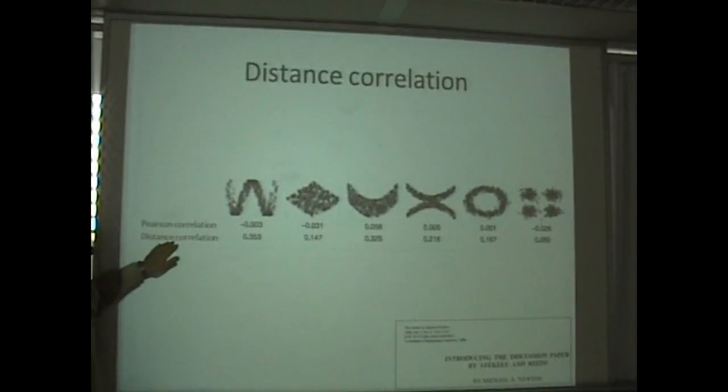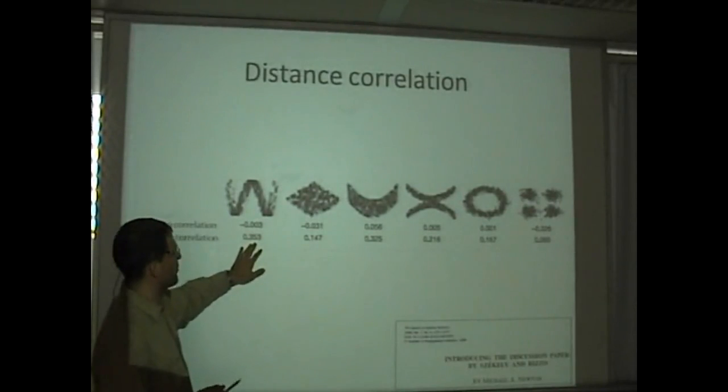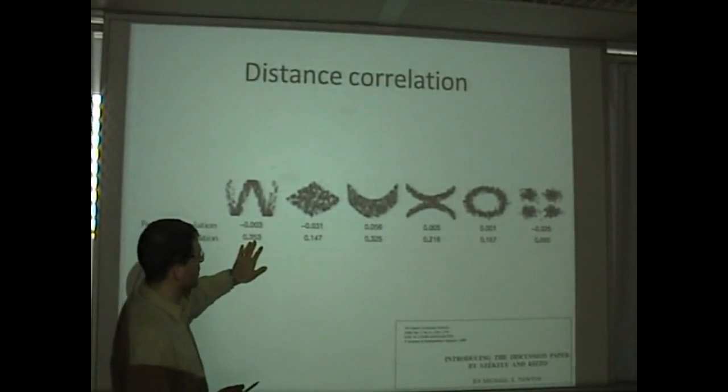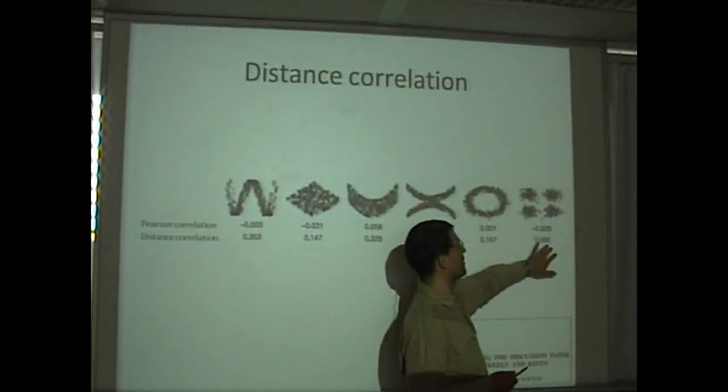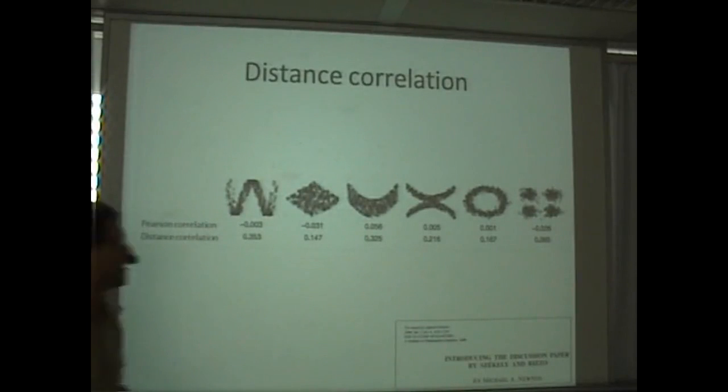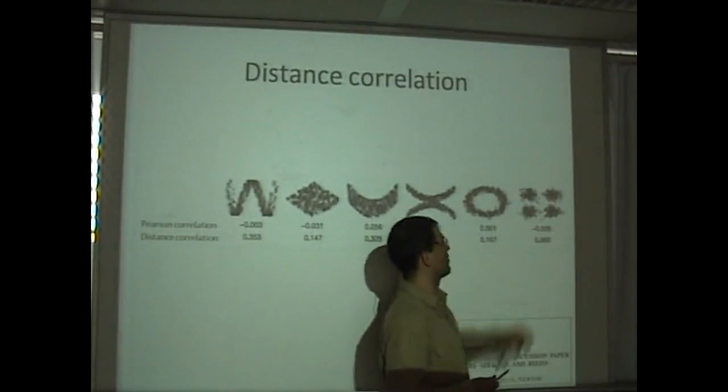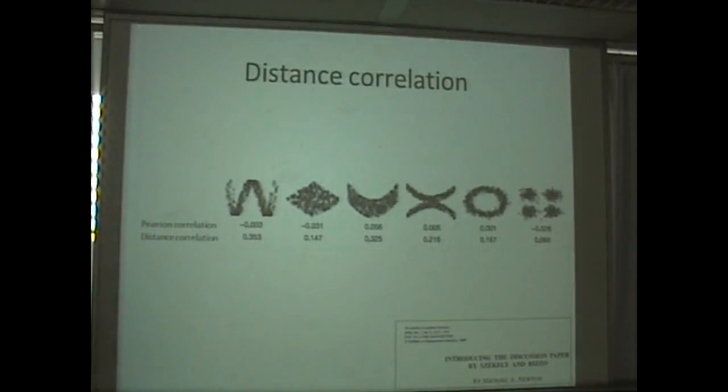And there are the values that you compute with the recipe that he describes to you in those two lines from the paper. There are the values for the distance correlation that happen to scale between zero and one. And the important thing is that here we get significantly non-zero values everywhere, except in the last example where you expect a zero. Because this really, here, X and Y are independent. So that's what it can do for you.